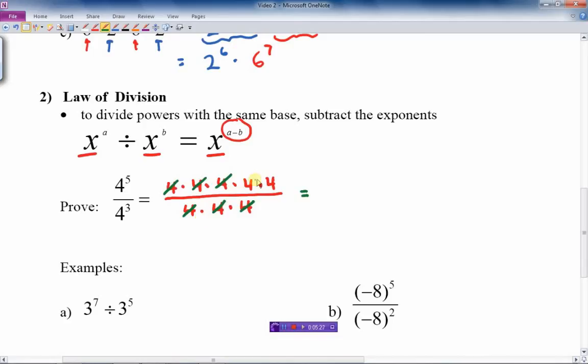So we're done. What's left? 4 times 4. Well, 4 times 4 is what? That's just 4 squared. And that's our answer, 4 squared.